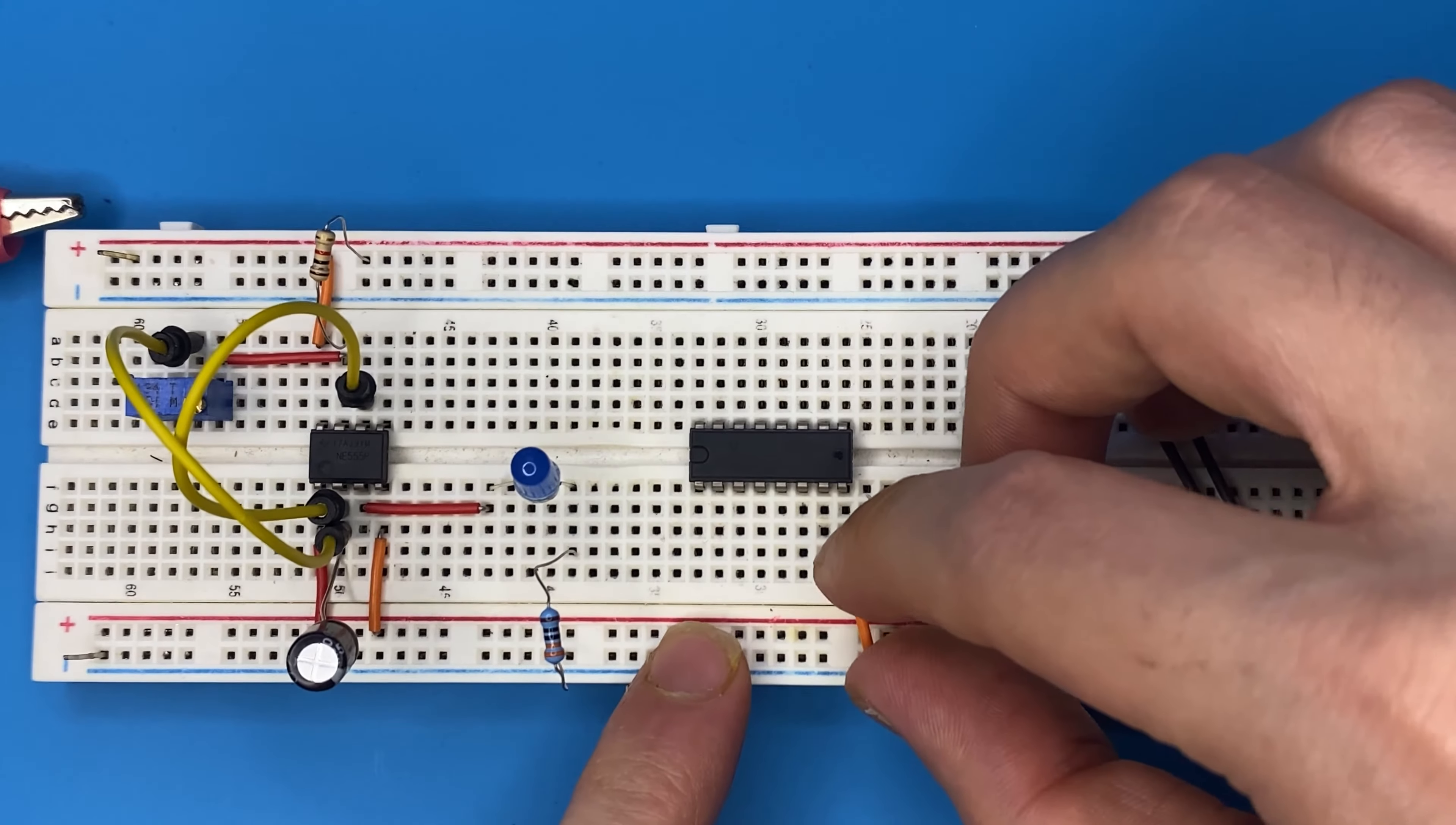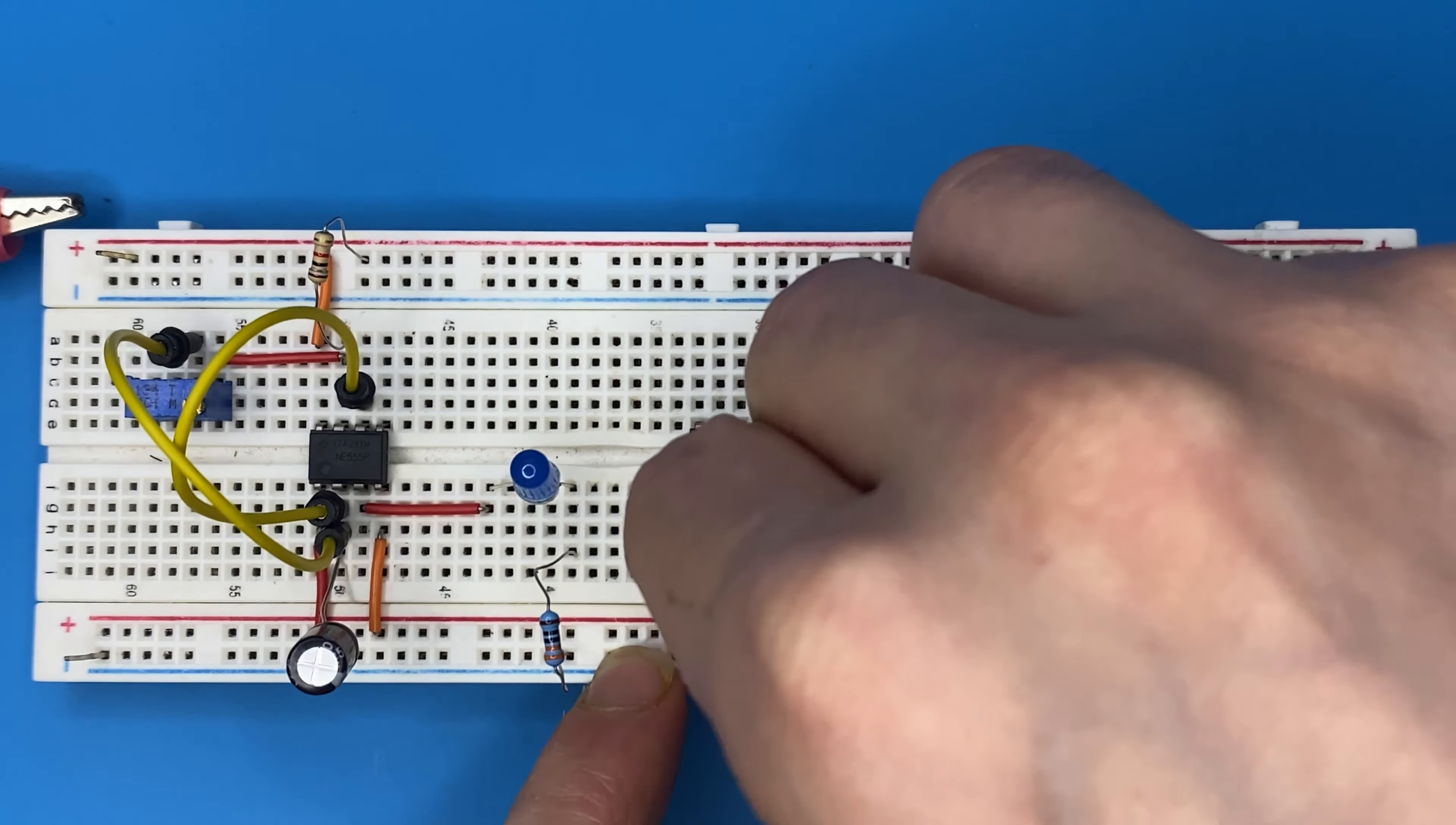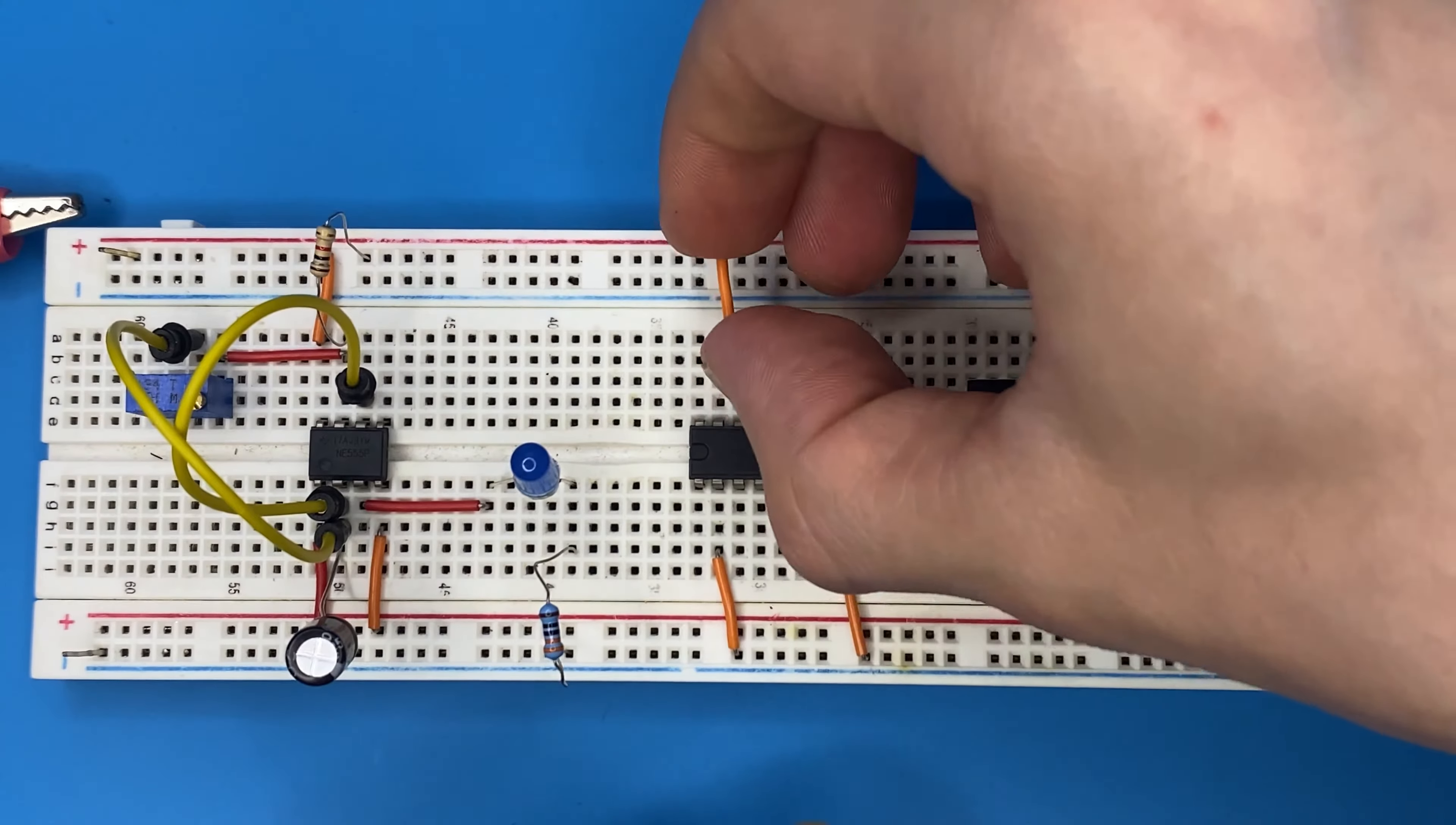Connect pin 8, pin 2, and pin 15 of the 4026 IC to the ground. And here is the 15 pin.